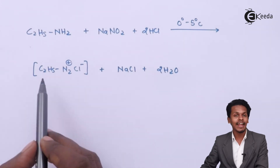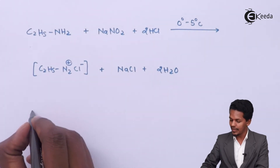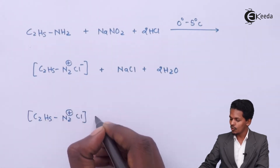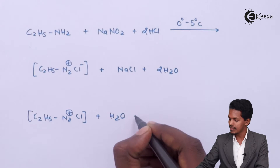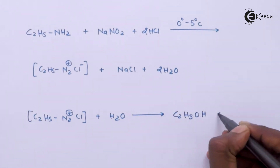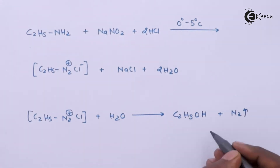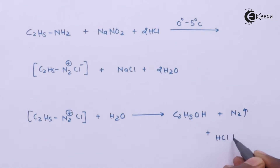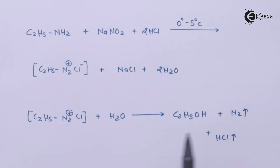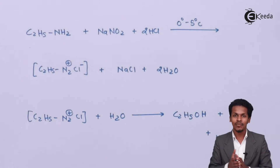Ethyl diazonium chloride, when reacted with water, gives C2H5-OH (ethanol), along with N2 gas liberated as a gas, and HCl as a byproduct. So we have converted the primary amine ethanamine to ethanol, identified by evolution of nitrogen gas. This concludes the reaction of primary amines with nitrous acid.